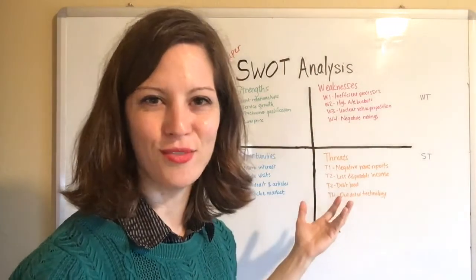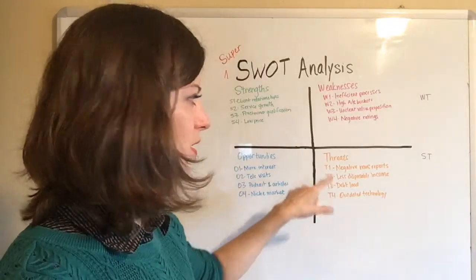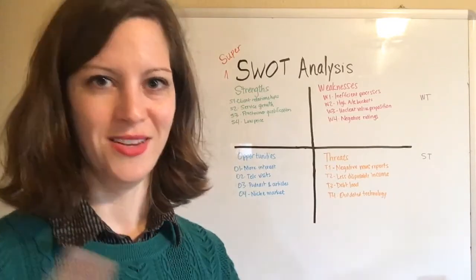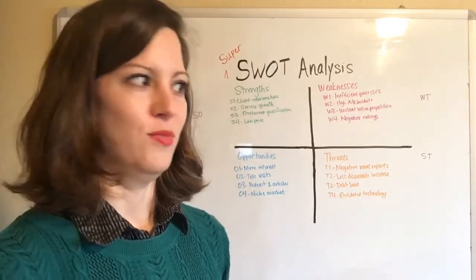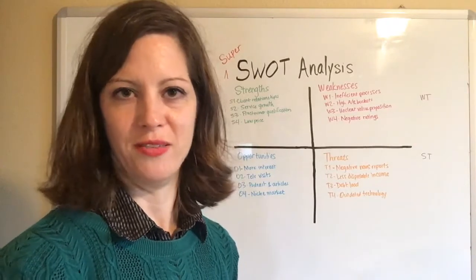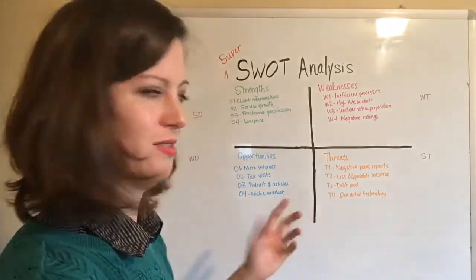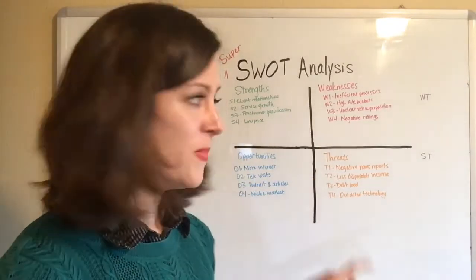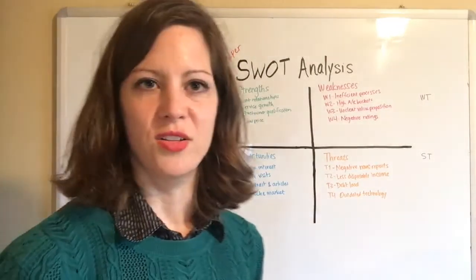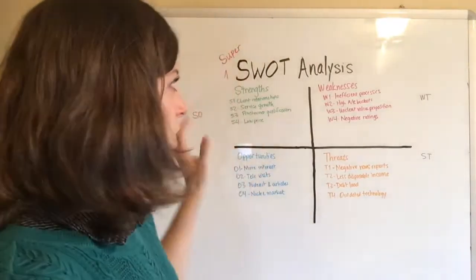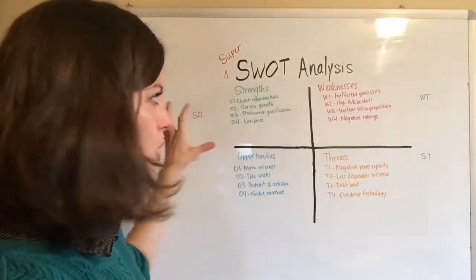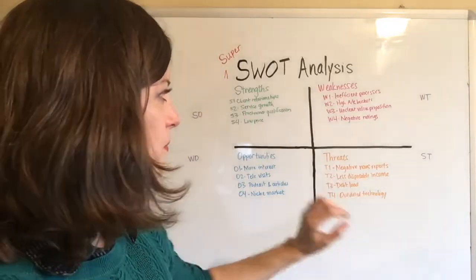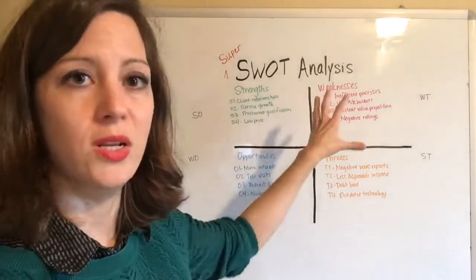Threats — things from the outside that could cause harm. Negative news reports: there are quite a lot of stories coming out about integrative health problems, bad outcomes, and deaths from naturopathic and holistic practices. Less disposable income, debt load, and outdated technology. These are examples of what a SWOT analysis would have. Now when we combine them, we get strengths with opportunities, strengths with threats, weaknesses with opportunities, and weaknesses with threats.